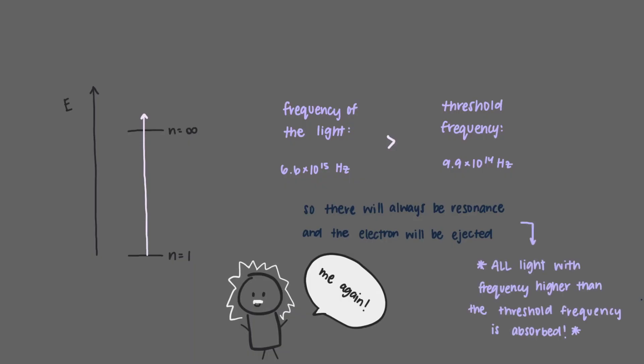To understand why all light with frequency higher than the threshold frequency is absorbed, we will need to discuss more deeply the change that occurs to the electron wave during this process, and that will be a topic for a later video.